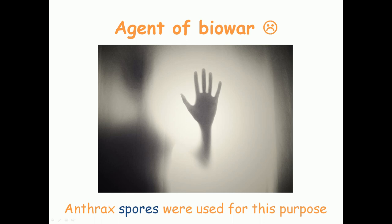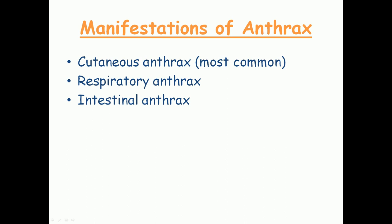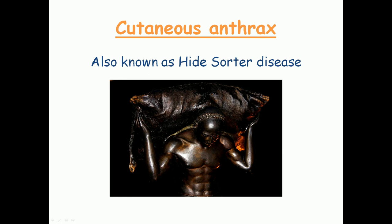Bacillus anthracis has been used as an agent for biowarfare for a long time, with the spores of anthrax being used for this purpose to kill many people. The manifestations of anthrax can be classified into three types: the most common is cutaneous anthrax, followed by respiratory or pulmonary anthrax, and the least common type is intestinal anthrax.